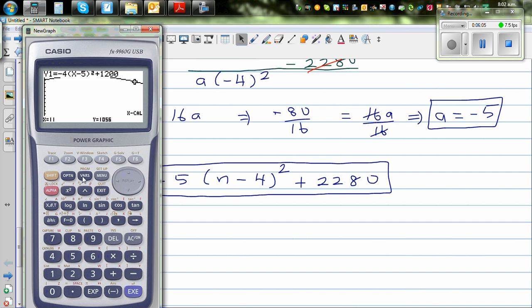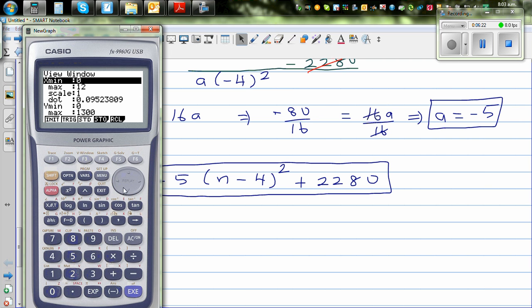So let's confirm this. So go to your graphic calculator and type in the equation. That is minus 5 times X minus 4 the whole squared plus 2,280. I need to change the scale from 0 to 20. Scale of 2. And Y I'll go from 0 to maximum is 2,280. I'll go to 2,300. And draw the graph. So this is the graph. It goes like this. So your GSOL and maximum. Fourth month you get the maximum.